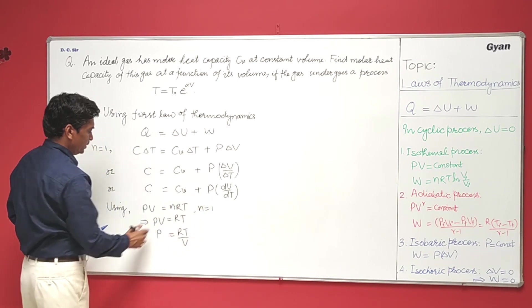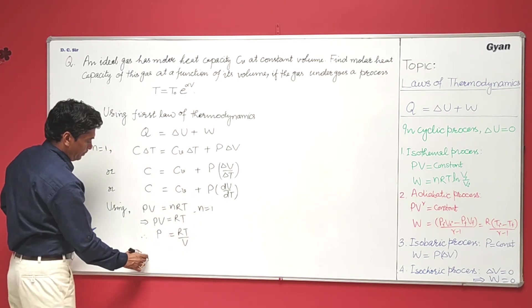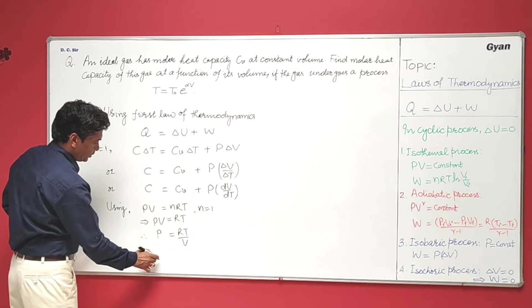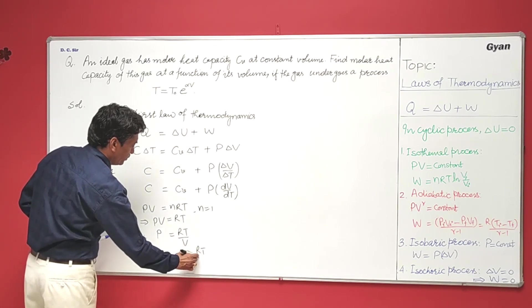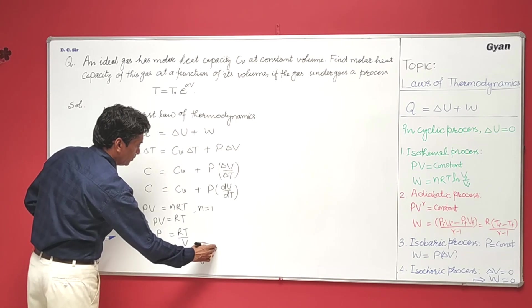Substituting this value in the equation, we have C equals Cv plus RT over V times dV over dT.